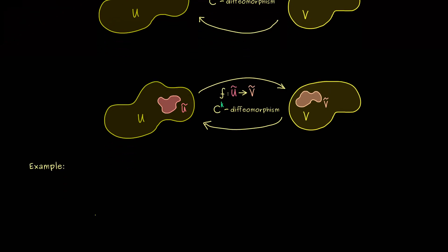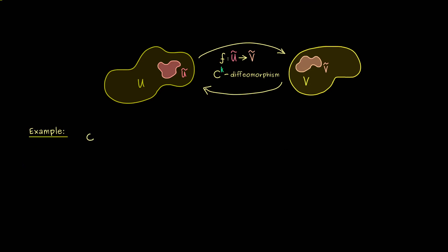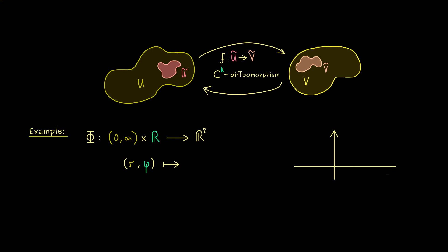To see this, let's look at an important example: two-dimensional polar coordinates. These can be described by a map which we call capital Phi. The domain is given by the positive real numbers cross the whole real line, and the codomain is R^2. From the positive real line we take the variable r, and from the other the variable phi. So we have a radius and an angle phi — we describe a point by its distance from the origin and by the angle from the x-axis. So for the x-coordinate we get r times cosine of phi, and for the y-coordinate r times sine of phi. That's the whole definition for polar coordinates in two dimensions.